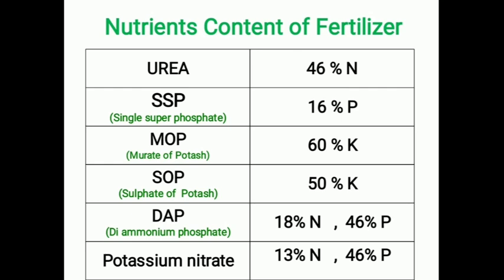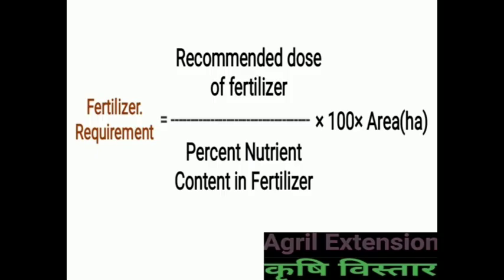In Potassium Nitrate, it contains 13% Nitrogen and 46% Phosphorus. For the calculation of fertilizer requirement, you must learn the formula: fertilizer requirement equals recommended dose of fertilizer divided by percent nutrient content in fertilizer, into 100, into area in hectares.